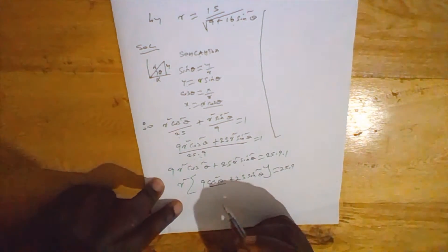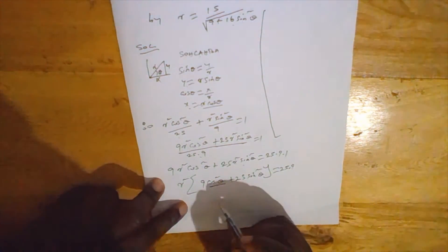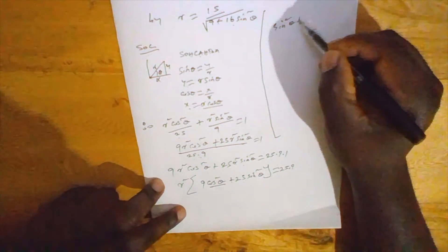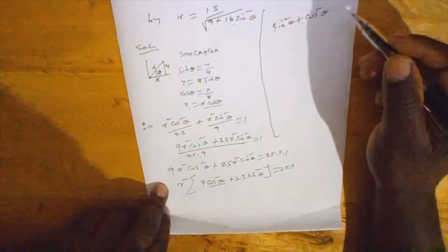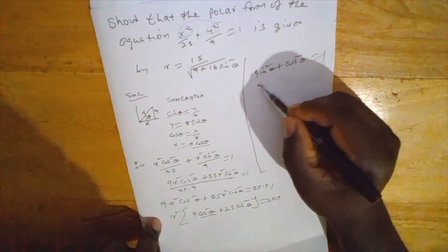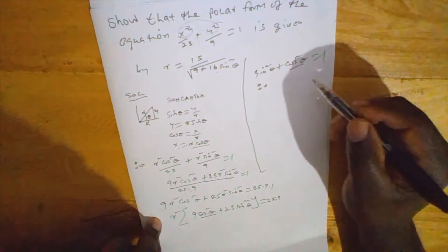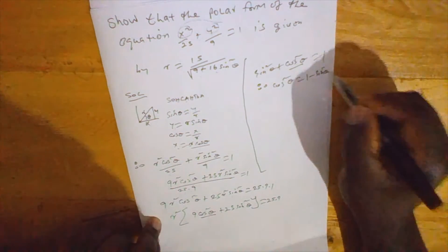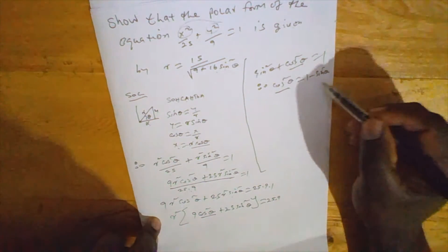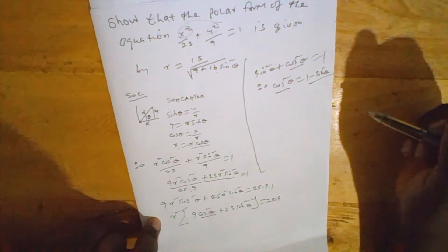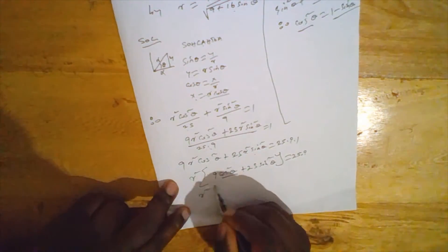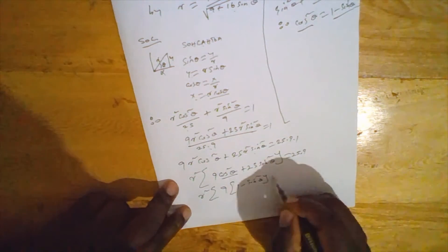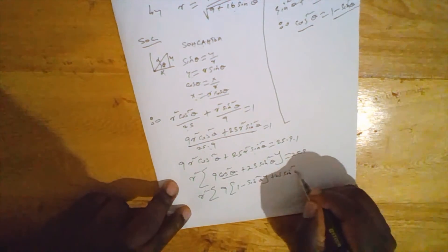Now we can express cos squared theta in terms of sin theta. We know that sin squared theta plus cos squared theta equals 1, therefore cos squared theta equals 1 minus sin squared theta. We substitute this into our equation: r squared times 9 times (1 minus sin squared theta) plus 25 sin squared theta equals 25 times 9.